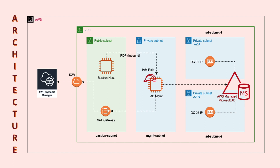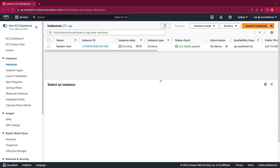Like any other AWS managed service, you can access your AWS managed Microsoft directory using AD administration tools from an EC2 instance that is joined to the AD. In this case, it is the AD management instance which is launched in the management subnet that you see on the screen.